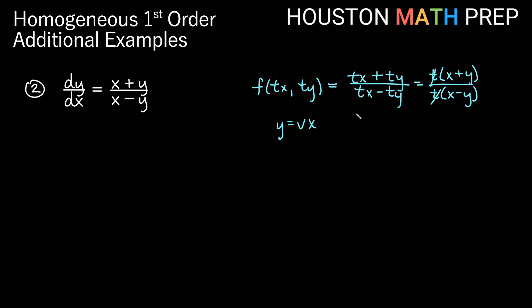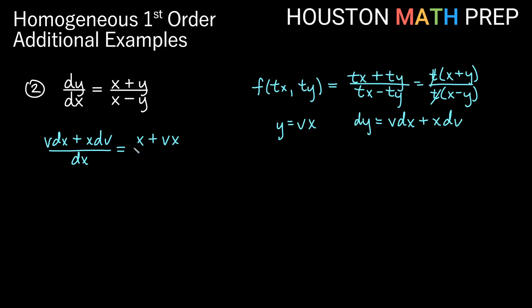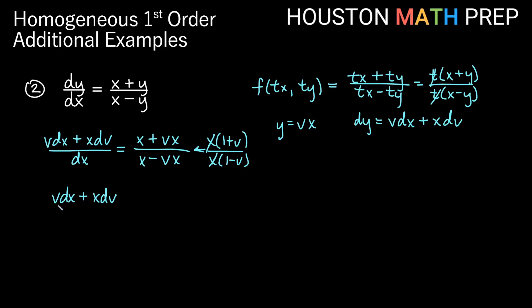We use y equals vx and dy equals v dx plus x dv. Substituting: (v dx plus x dv) over dx on the left equals (x plus vx) over (x minus vx) on the right. We factor x from numerator and denominator, giving x(1 plus v) over x(1 minus v), and reduce the x's to get (v dx plus x dv) over dx equals (1 plus v) over (1 minus v).